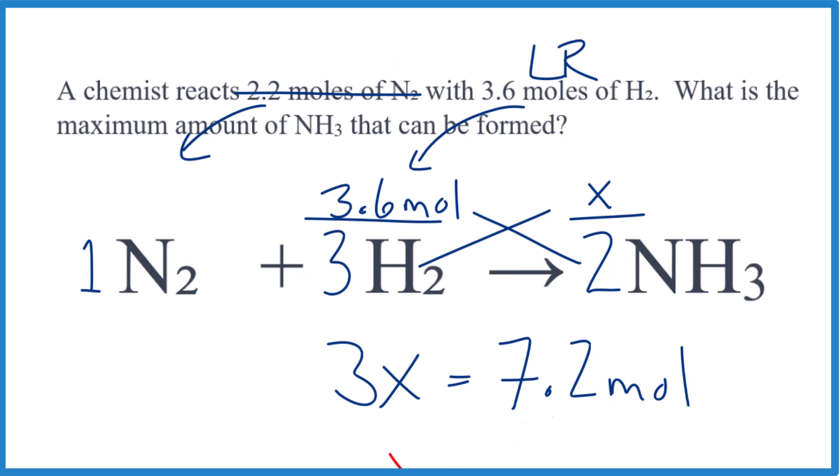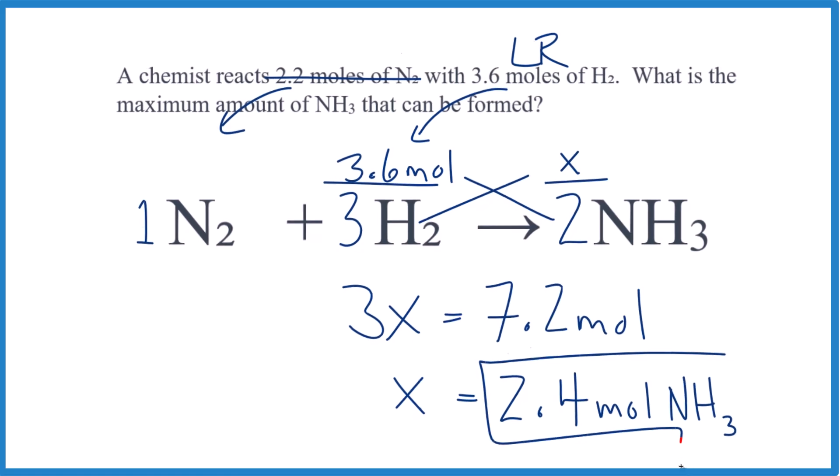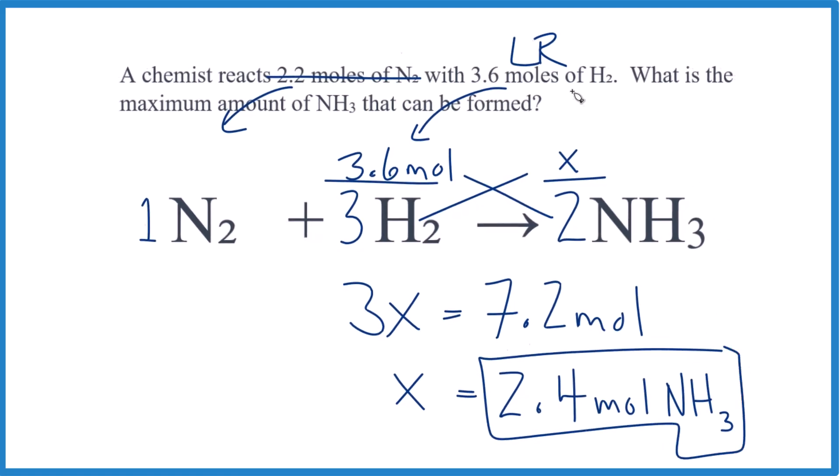Divide both by 3 and X equals 2.4. And remember, that's moles of NH3.